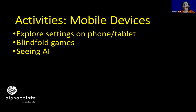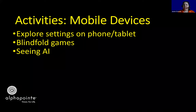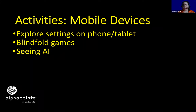If you want something more functional, Seeing AI is an app you can get that has currency readers and optical character recognition — it can read both computer print and handwriting, as long as the handwriting is somewhat neat. It's got a money reader, it can even identify people standing in front of you. It's very robust and it's free, which is the focus for today.